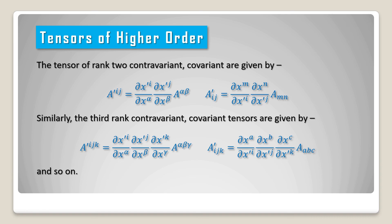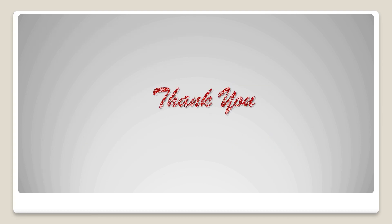Again the third rank covariant tensor is given by a prime lower suffix ijk equal to del x alpha divided by del x prime i, into del x beta divided by del x prime j, into del x gamma divided by del x prime k, into a lower suffix alpha beta gamma, and so on. Thank you, see you in the next video.